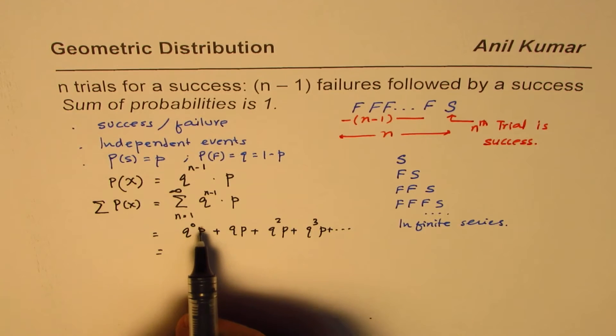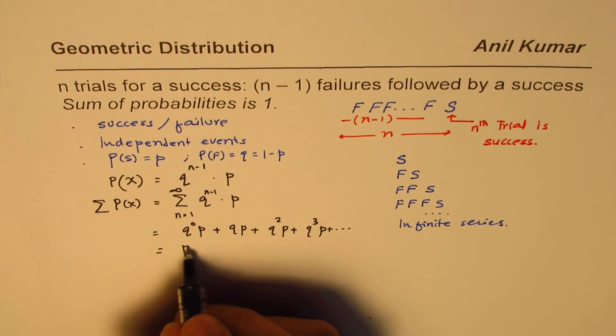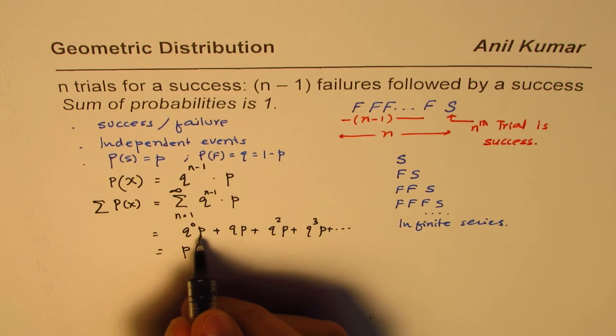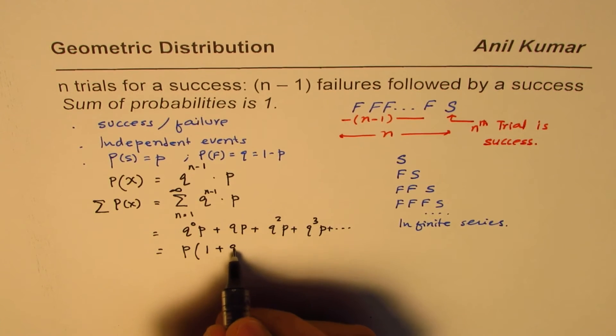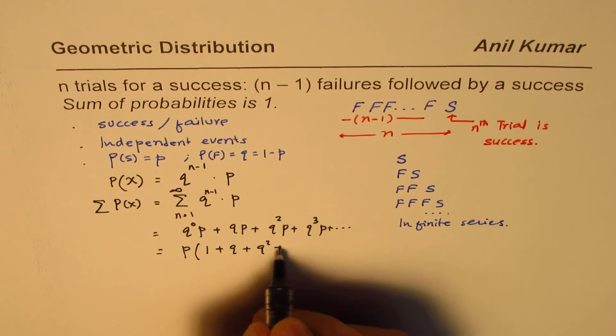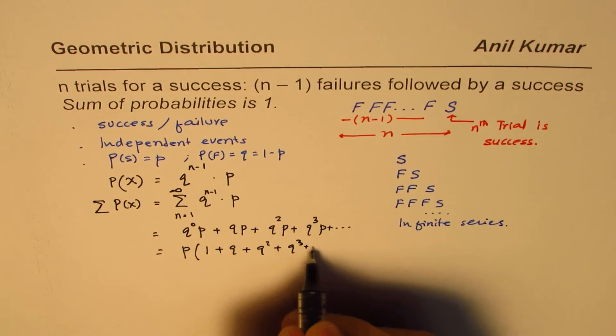Now, q to the power of 0 is 1, anything to the power of 0 is 1. So we see p is common. So we can take p as common. So we get this term is 1, q to the power of 0 is 1, plus q, plus q square, plus q cube, plus so on.